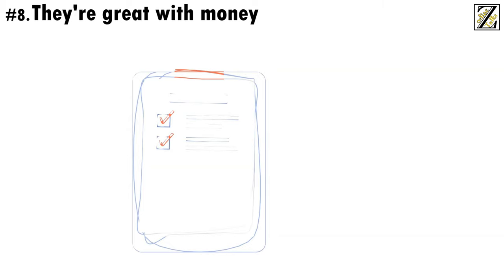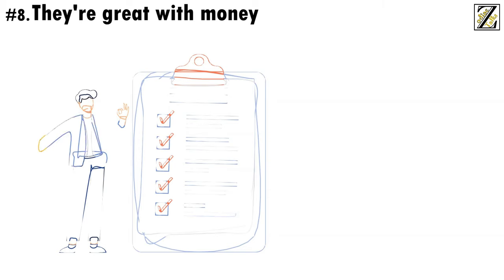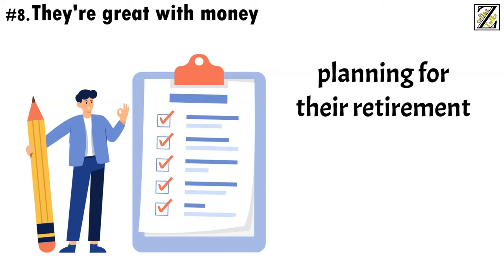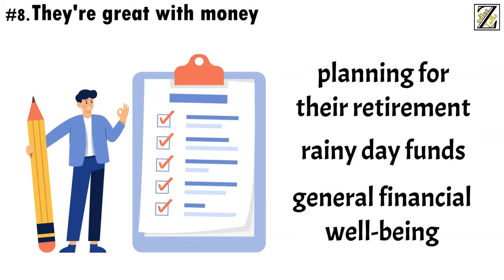Number 8. They're great with money. Cancers are always planning for the future, in part because it's exciting, in part because they want to get there as prepared as possible. As such, Cancers tend to be very practical and careful with their money, planning for their retirement, rainy day funds, and general financial well-being.